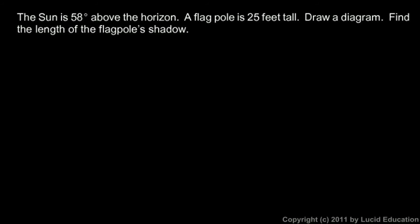We're told that the Sun is 58 degrees above the horizon. So here's the ground, and let's draw the Sun up here in the sky. This angle of inclination here is 58 degrees, so this incoming ray of sunlight, or the line of sight from you to the Sun, makes an angle of 58 degrees.